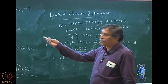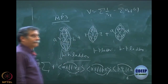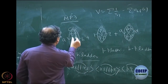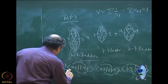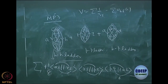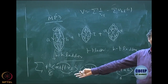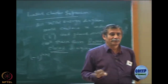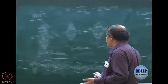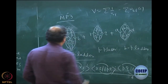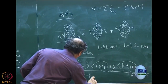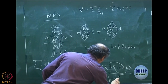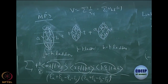Anti-symmetry will be automatically taken care of if you change the labeling — your loops will change accordingly. Then, equivalent pair lines: there are three equivalent pairs, giving a factor of 1/8. The denominators are products: one is epsilon_A plus epsilon_B minus epsilon_R minus epsilon_S, and another is epsilon_A plus epsilon_B minus epsilon_P minus epsilon_Q. Two denominators in product. It is very easy.